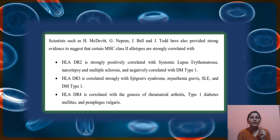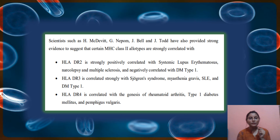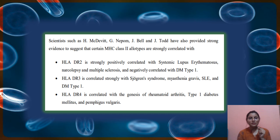Scientists like H. McDavid, G. Nippon, J. Bell, J. Todd, etc. have done significant work in this area. There is a paper on this which I will provide the link for. They have suggested evidence that MHC class 2 HLA types are very strongly related with autoimmune diseases.